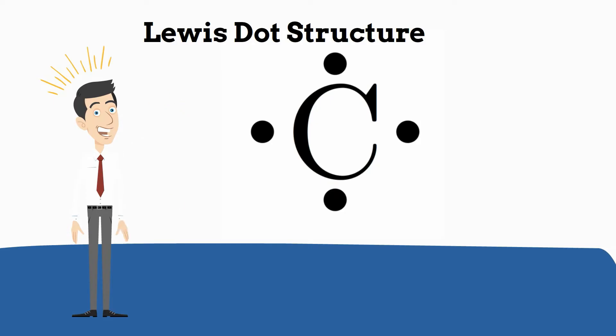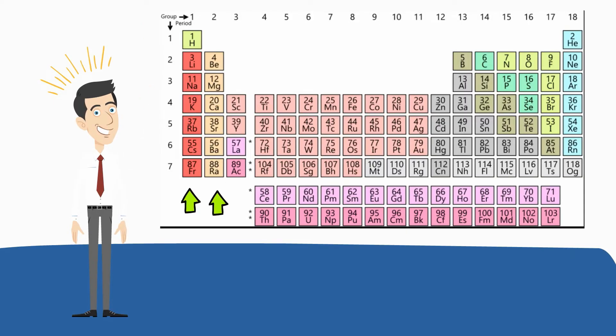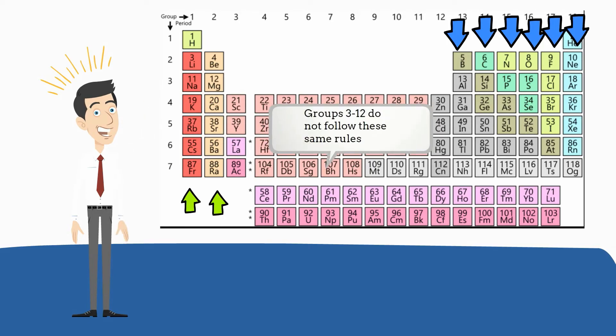An easy way to create these dot structures in groups 1 and 2, in groups 13 through 18, except for the element helium. Now groups 3 through 12 follow a different set of rules. You can just look at the group number to determine the number of valence electrons.